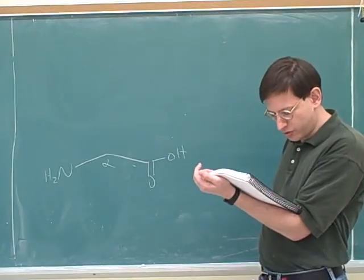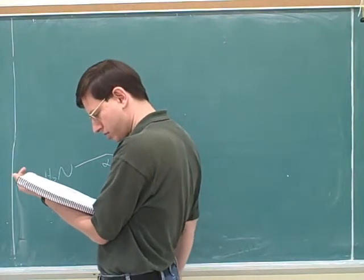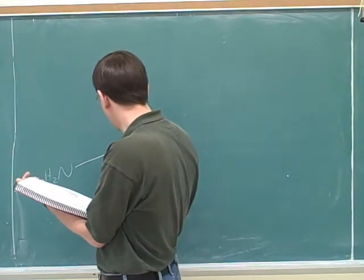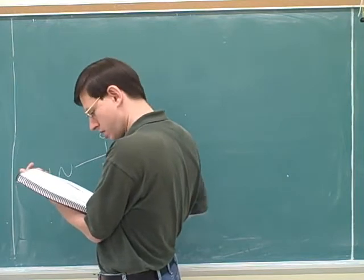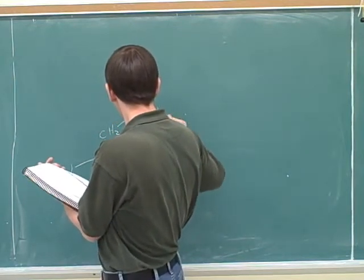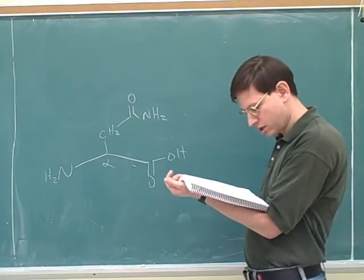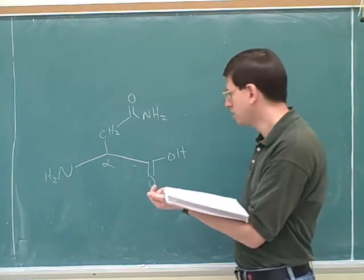Now let's go on to asparagine. Who's the beta carbon going to be in asparagine? CH2. And then this would be the rest of the side chain?